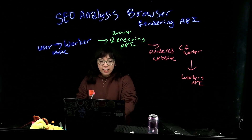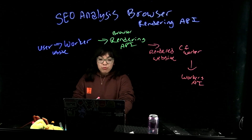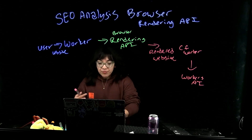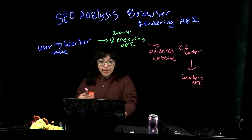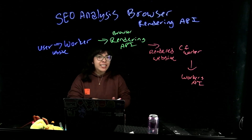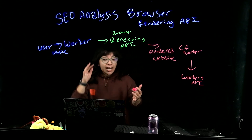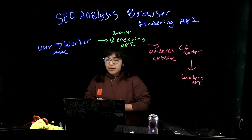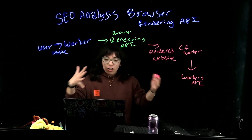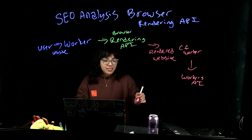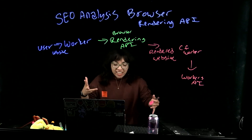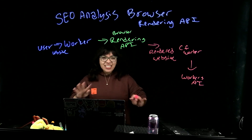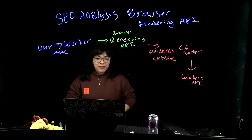So what does the Workers browser rendering API render? What do we analyze? We get the title tag, meta tags, h1, links, images, alt text, performance metrics, tags, elements, divs — so much.